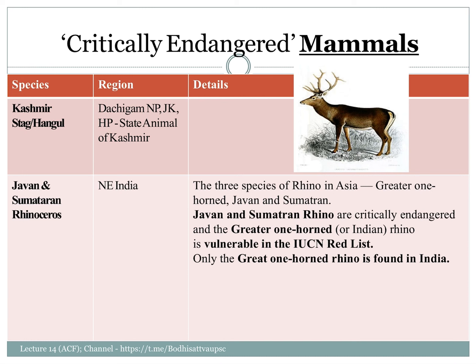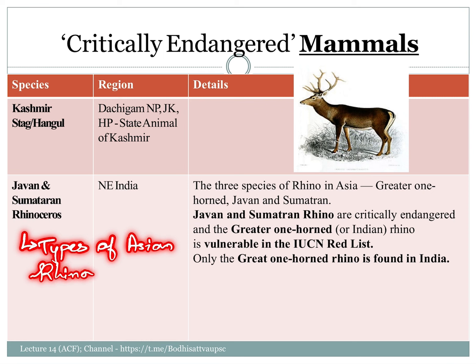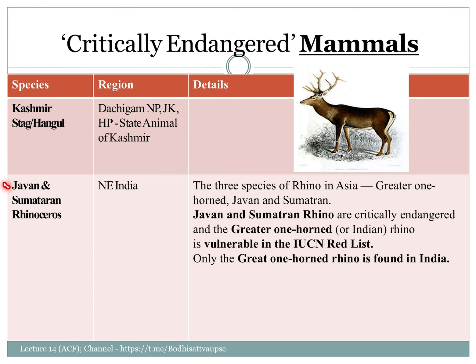Java's rhinos are one type of Asian rhino. There are: 1. Javan rhino, 2. Sumatran rhino, 3. Indian rhino, and 4. one-horned rhino. The Sumatran rhino is located in Malaysia and Indonesia, on the Java and Sumatra islands.